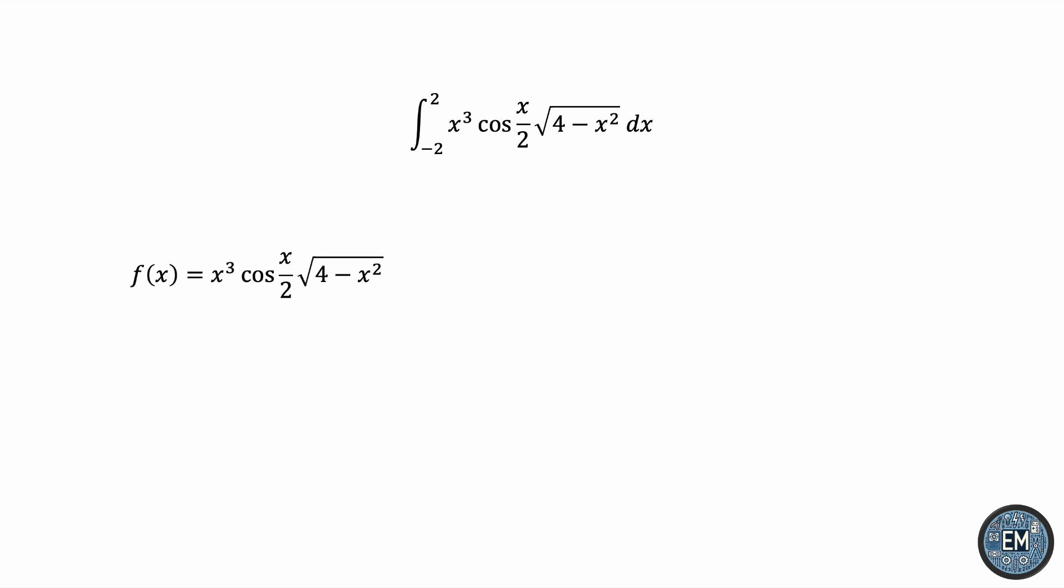If we set f of x to x cubed times cosine of x over 2 times the square root of 4 minus x squared, then f of negative x will be the same thing, just replace every x with negative x. The cube of negative x is the negative of the cube of x. Cosine itself is an even function, meaning the negative version of the input results in the same output as the positive version, so you can just remove the negative sign from the input and cosine will retain its value. The square of negative x is the square of x, so this part in itself is also even. Overall, notice that f of negative x is just the negative version of f of x. So the integrand is indeed an odd function. The integral is just zero.